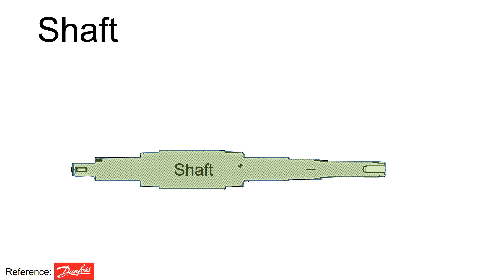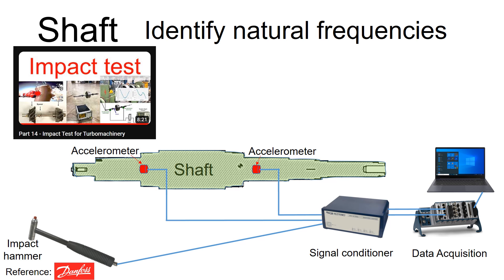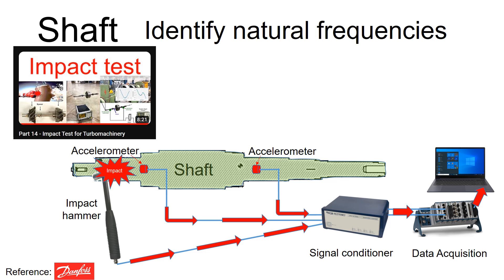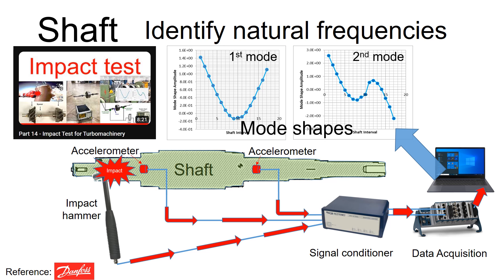Identifying natural frequencies is crucial. Part 14 video outlines the detailed steps to identify natural frequencies and explores the typical equipment setup for impact testing. After the impact is applied, signals from the sensors travel to the data acquisition system. The output from the impact test includes natural frequencies and their corresponding mode shapes.